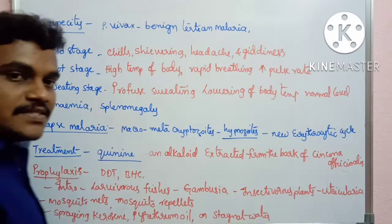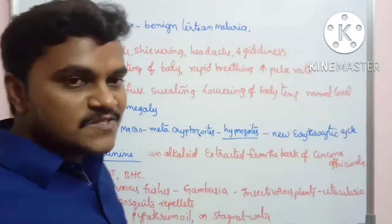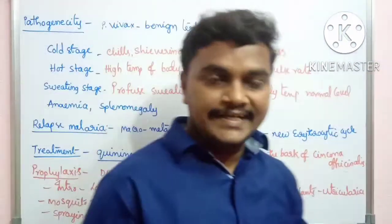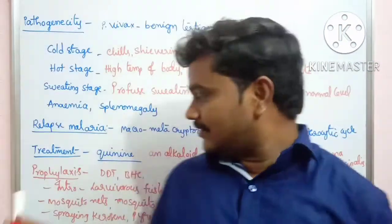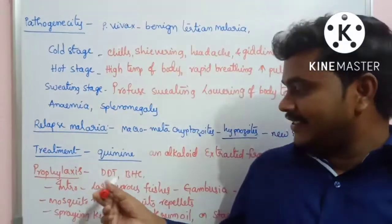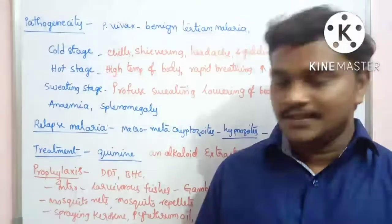For prophylaxis, spraying of DDT — dichlorodiphenyltrichloroethane — and BHC are used to control mosquito populations.